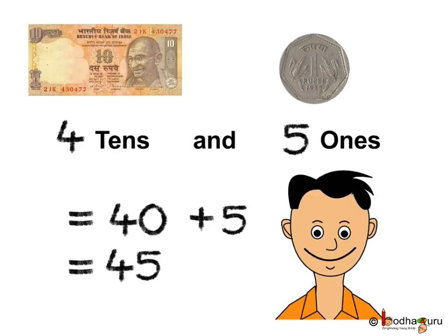So, he has 4 tens and 5 ones which is equal to 40 plus 5. 40 plus 5 is equal to 45. So, Aman saved 45 rupees.